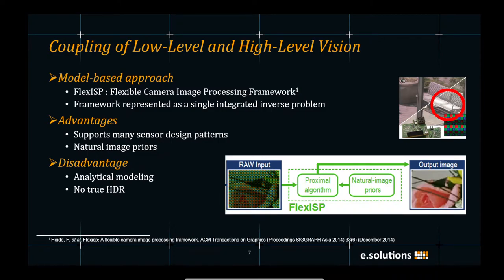Another approach to build such a pipeline is the coupling of low-level and high-level vision tasks in a unified framework. A model-based approach called Flex ISP is shown in the slide, which is a unified optimization framework defined as a single integrated inverse problem. Flex ISP offers several benefits such as it supports many sensor design patterns and incorporates natural image priors.